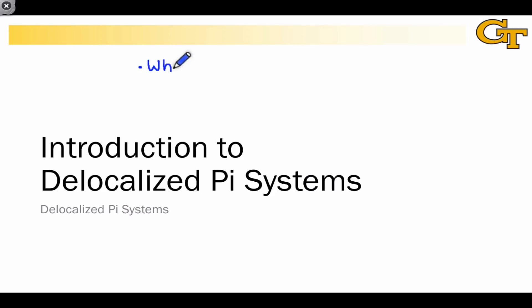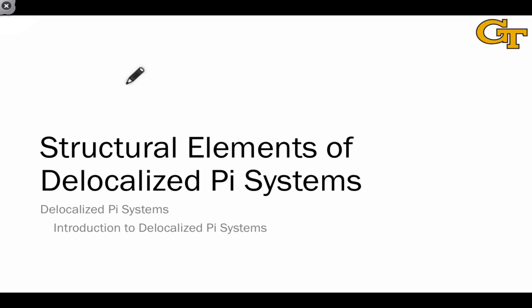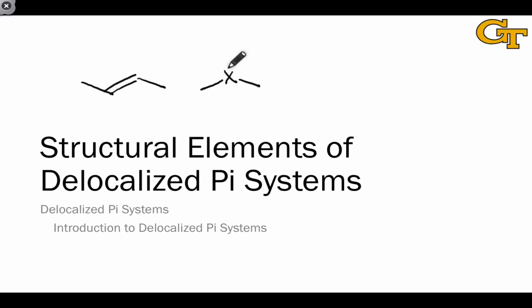Let's begin by defining what exactly we mean by a delocalized pi system and learning how to identify them within organic molecules. This is a prerequisite skill — if we want to study delocalized pi systems, we have to be able to recognize them within organic structures. If you've been practicing identifying when resonance is relevant to a portion of a molecule, you'll have no problem identifying the structural elements of delocalized pi systems.